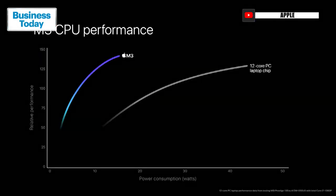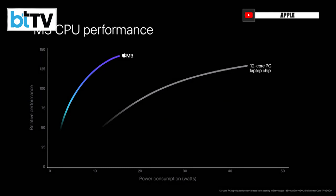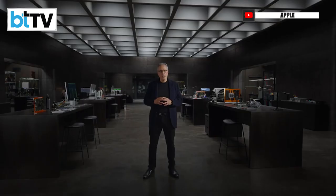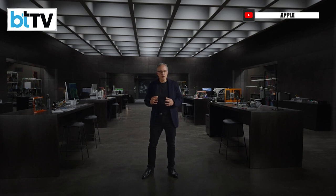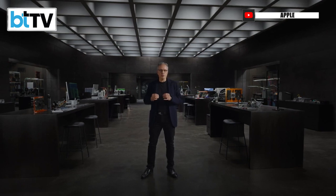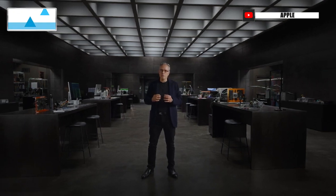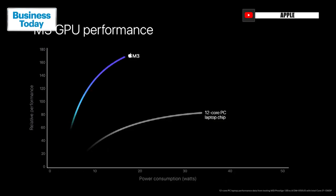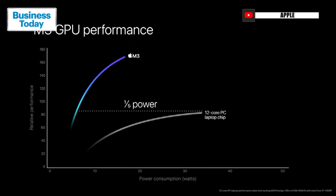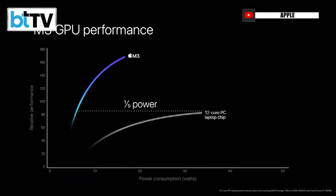When we compare it against the latest 12-core PC laptop chip, it delivers the same CPU performance using just one quarter of the power. And when we compare it to the GPU performance of that chip, it delivers the same performance using just one fifth of the power. It's incredible.